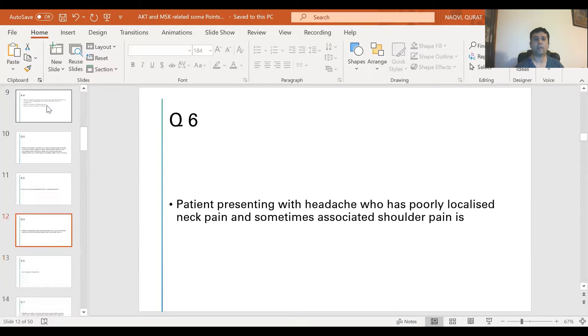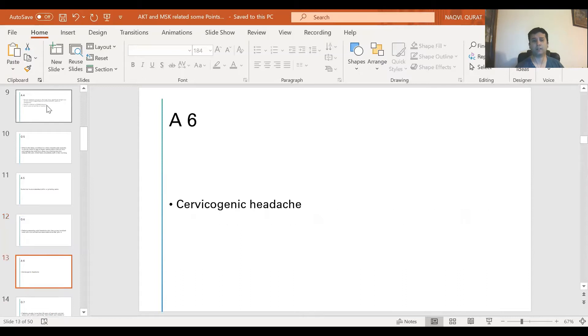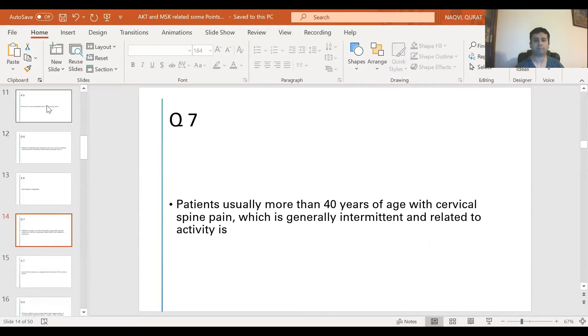Question 6: Patient presenting with headaches or poorly localized neck pain, sometimes associated with shoulder pain. There shouldn't be any midline or spinal tenderness. The answer is cervical genetic headache. Question 7: Patients usually more than about 40 years of age with cervical spine pain which is generally intermittent and related to activity. The answer is cervical spondylosis or degenerative disease of the cervical spine.